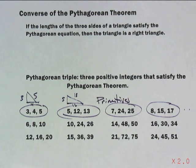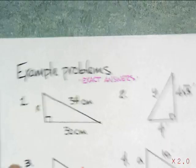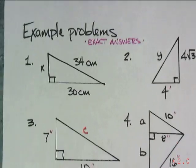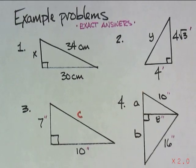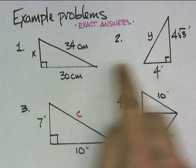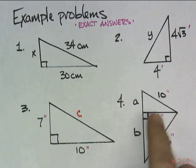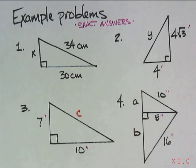And speaking of the problems, here they are. I want exact answers for these four right triangles. Well, excuse me, there's three right triangles and one with an altitude. Find X, find Y, find C, and find both A and B for number 4. Good luck, and we will see you tomorrow.